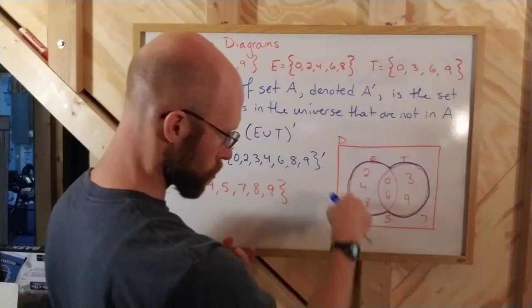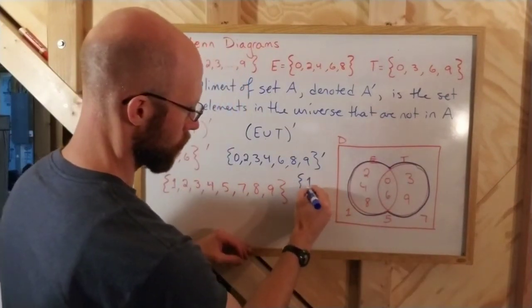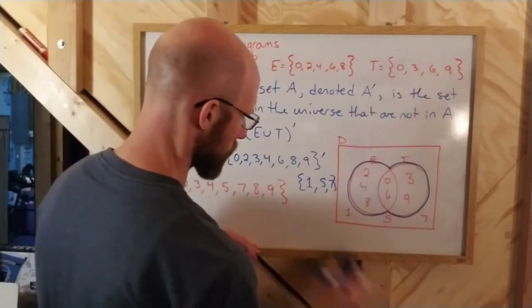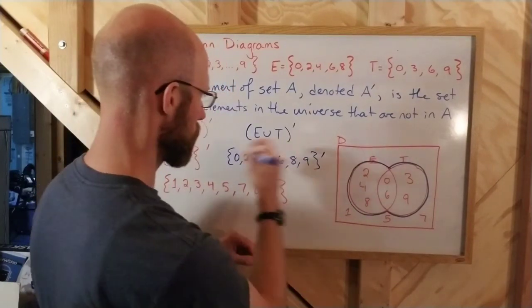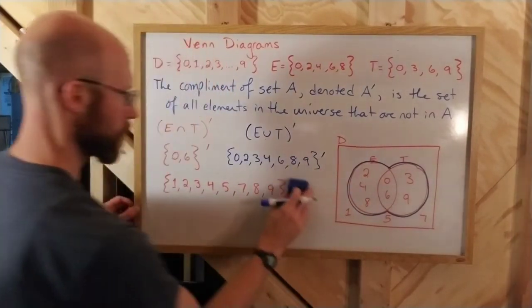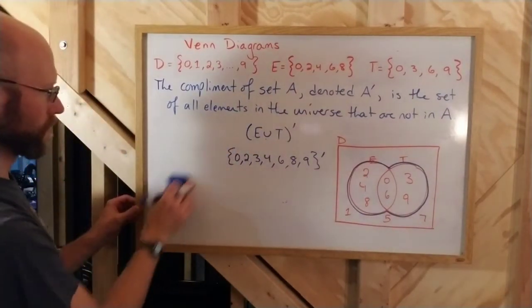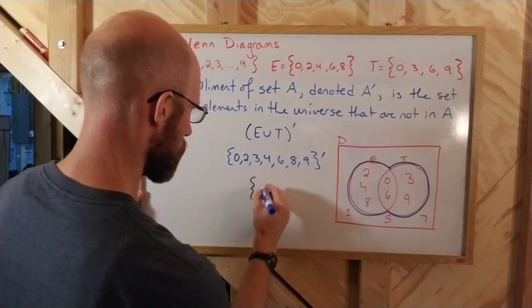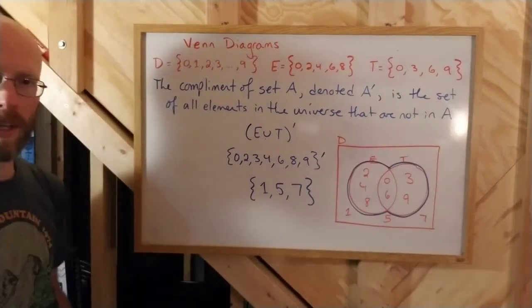Well, the only things not in the blue set there are 1, 5, and 7. So that would be 1, 5, 7. I squeaked that in there. Didn't quite make it, did I? So that's that one. I erased the red. I'm really doing this with limited space here, unfortunately. So it would be the set 1, 5, 7.